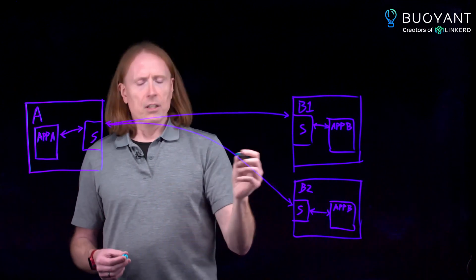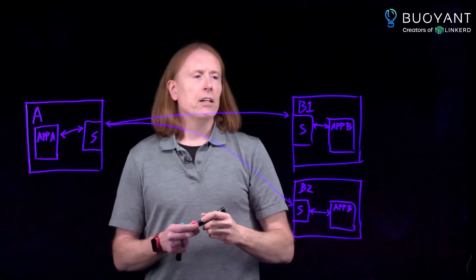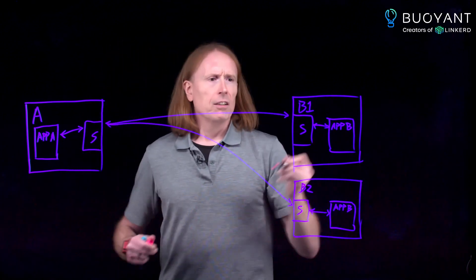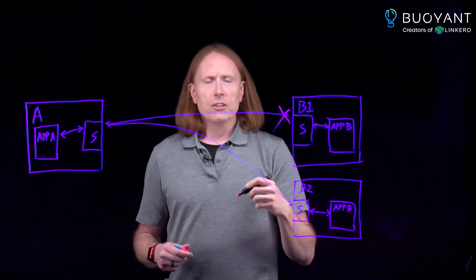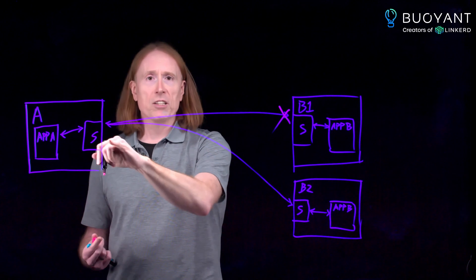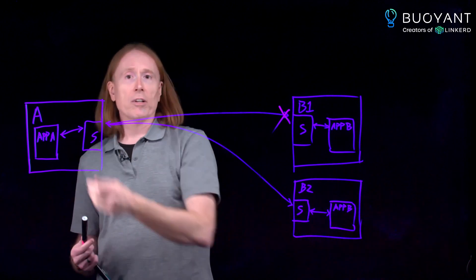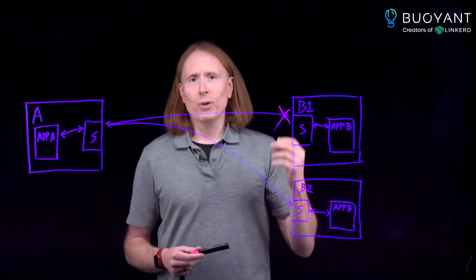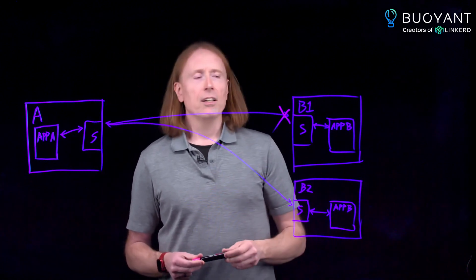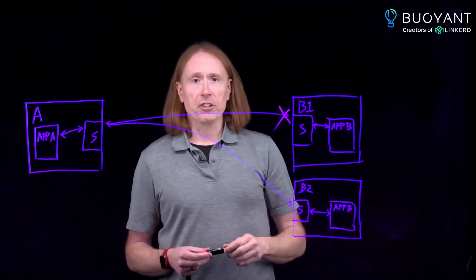Another thing that happens is suppose that when this particular connection got made, suppose it failed. So the first thing is that the sidecar here, if that request fails, the sidecar can just immediately route it over to another one without even bothering to let the application pod know. We get to do immediate automatic retries. Again, this is not requiring you to do any changes in your application code at all.